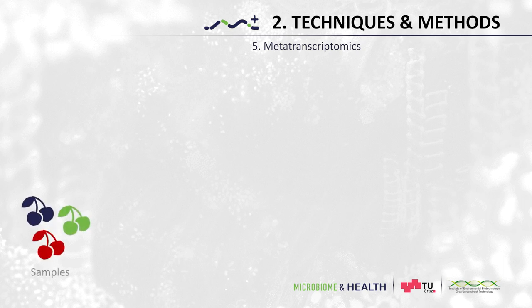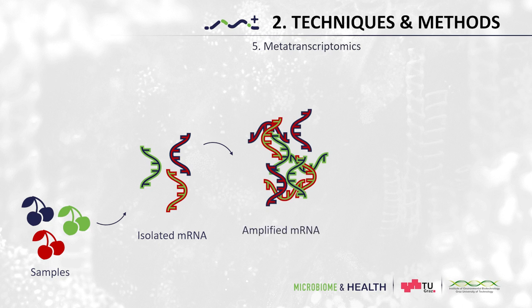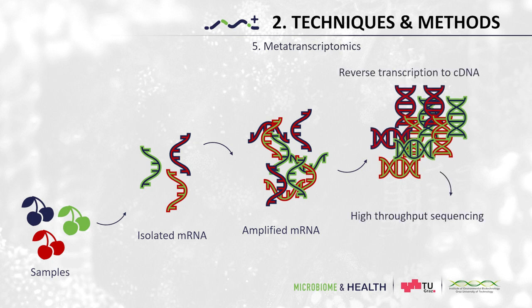This brings us to the next method: metatranscriptomics. Metatranscriptomics is a method that can identify active genes of the microbiome and how much they are expressed. The way we do this is very similar to metagenomics, but instead of extracting the DNA, we extract the RNA. RNA is a single-stranded nucleic acid which cannot be directly sequenced by most sequencing platforms. Therefore, the extracted RNA must be converted first to a complementary DNA, or cDNA for short. Similar to metagenomics, the sequenced cDNA is then assembled, annotated, and the function of the identified genes is predicted.